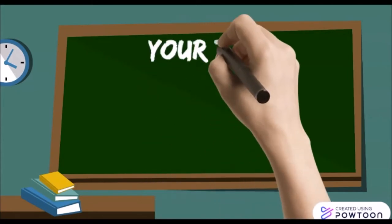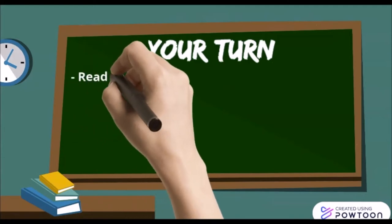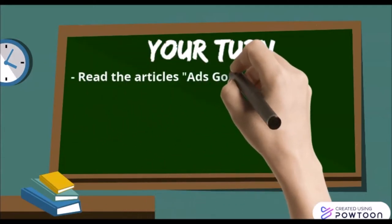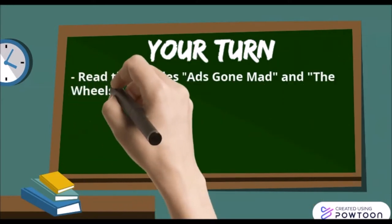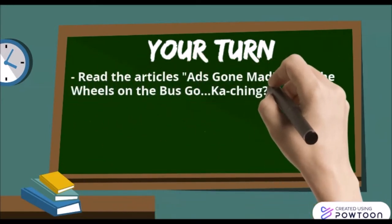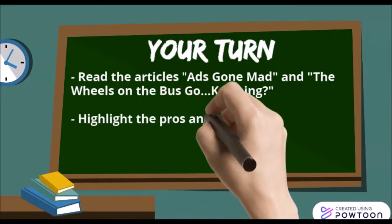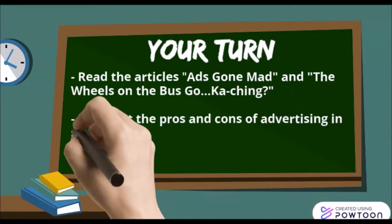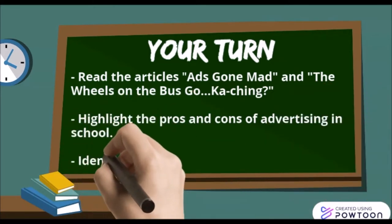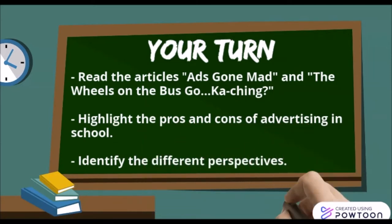Now it's your turn. You have two articles that you're responsible for reading for this week's lessons — you're going to read both of those articles: Ads Gone Mad and The Wheels on the Bus Go Ka-Ching. As you're reading, you're looking for the different pros and cons associated with advertising in schools. Once you've highlighted those pros and cons, you'll identify the different perspectives represented through that evidence.